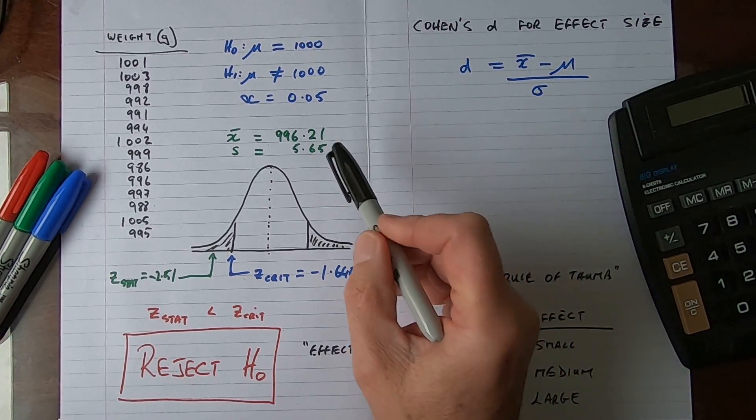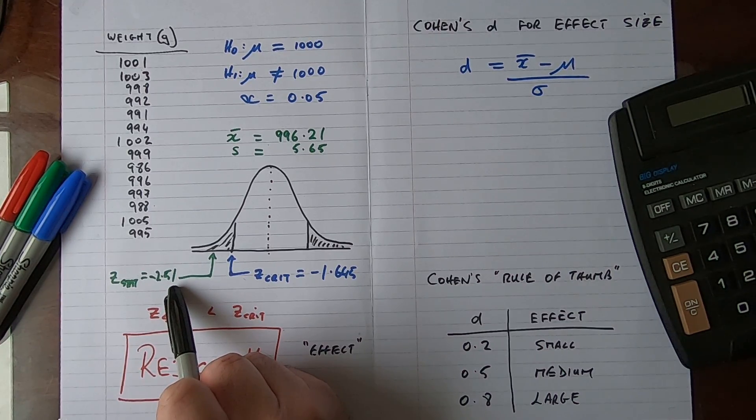I'm going to conduct this test at an alpha value of 0.05 and we've already worked out in this experiment here the sample mean x bar is 996.21, so that's an early indication that we could be having issues here. The sample mean is less than the population mean and s, the sample standard deviation, is worked out at 5.65. And when we use these figures now to calculate the z statistic for this one sample test, or we could also use a t-test here for a one sample t-test, the z stat works out at minus 2.51.